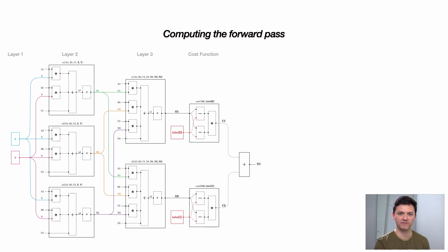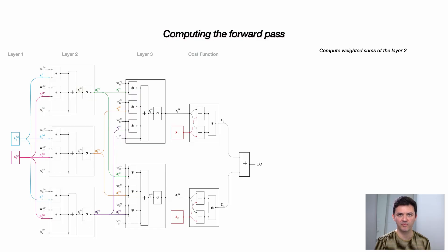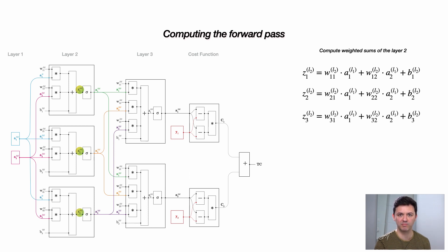We are now ready to start computing the forward pass. With the old image, let's remind ourselves how we used to do this before. To compute the weighted sums of layer 2, we needed to compute p1, p2, and p3: p1 was equal to a1 times x plus b1 times y plus c1, and similar for p2 and p3. Now with our new naming convention, we have z1, z2, and z3 of the second layer — the same calculations but with different subscripts and superscripts.